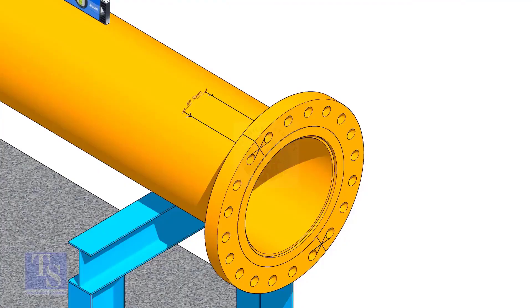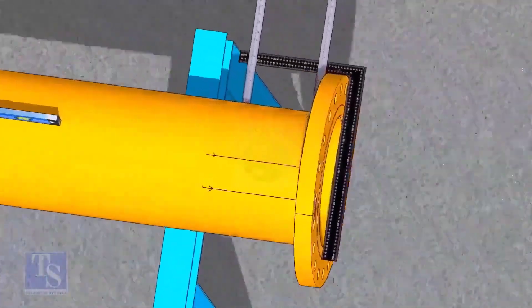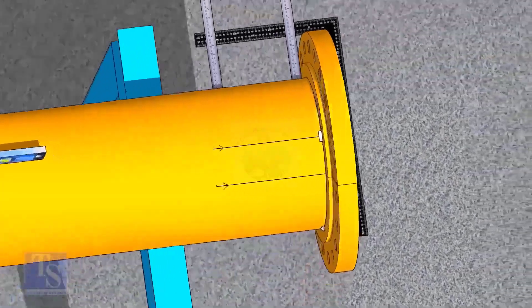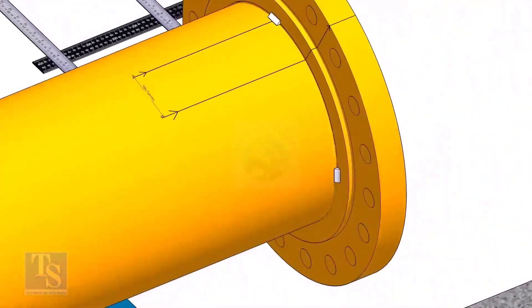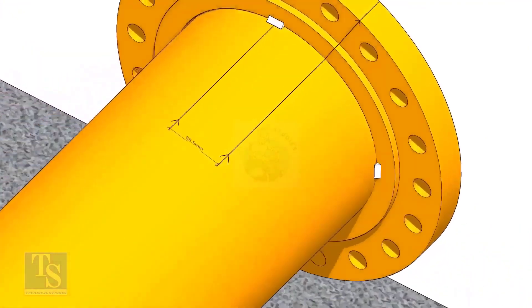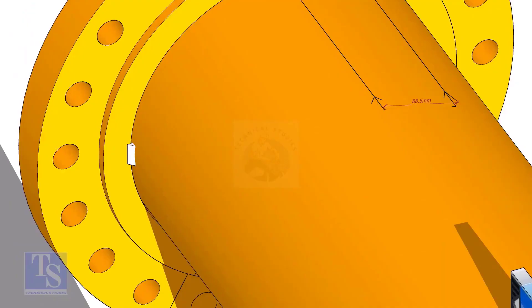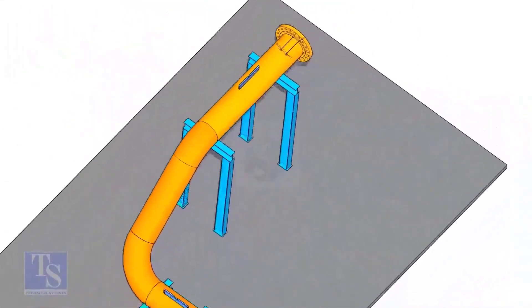Now, maintain the squareness of the opposite side and tack weld on both sides. Thank you for watching.